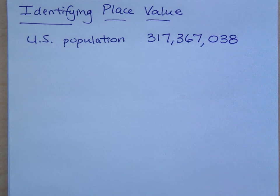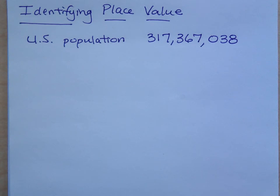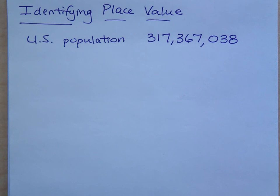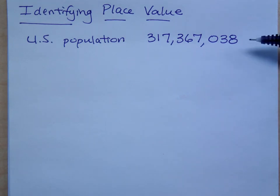Now understand that this was only an estimate. We used the census to try to get a very accurate count of the number of people living in the United States. Whether they are here legally or illegally, it still accounts towards the U.S. population. Now, why is this number always changing?